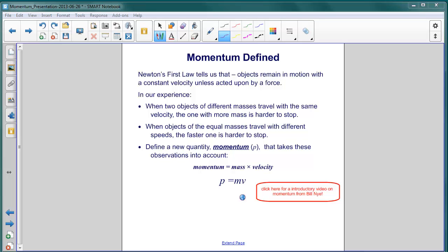So momentum is mass times velocity. And our shorthand, our equation for that is p equals mv, where p is a new quantity, momentum.